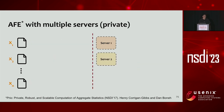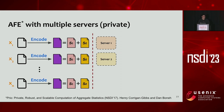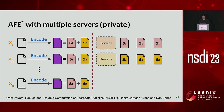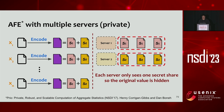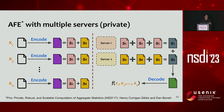To extend AFE to multiple servers with privacy, clients still perform encoding, then additionally create two secret shares S1 and S2 where S1 plus S2 equals the original encoding value. Seeing only one share reveals nothing about the encoding. Each server receives only one secret share, then locally sums all its shares to produce sum-of-S1 and sum-of-S2. The two servers exchange these sums and add them together to obtain the sum of original encodings, then run decode to get the statistical result.